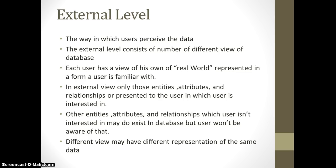Other entities, attributes, and relationships which the user is not interested in may exist in the database, but the user won't be aware of them. It's like the Facebook example: you are interested in certain groups and pages, and you will only be notified about the news feeds of those pages and groups which you have subscribed to. You will not be notified about news feeds of pages and groups you have not subscribed to. Different views may have different representations of the same data.